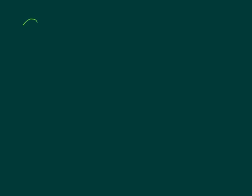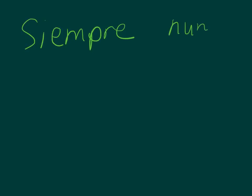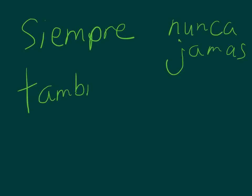And then you also have the opposites here. Siempre means always, and nunca means never. There's another word that means never: jamás. So if you say nunca jamás, that means never ever. Then we have también, which means also, and tampoco, which means neither.